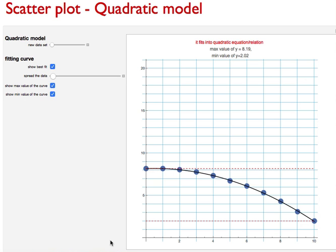This is a quadratic model with a scatter plot. This graph shows a scatter plot with the quadratic model or quadratic curve fitting into this model. You can change this.